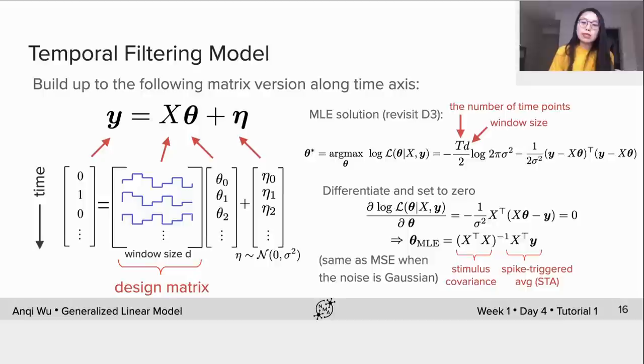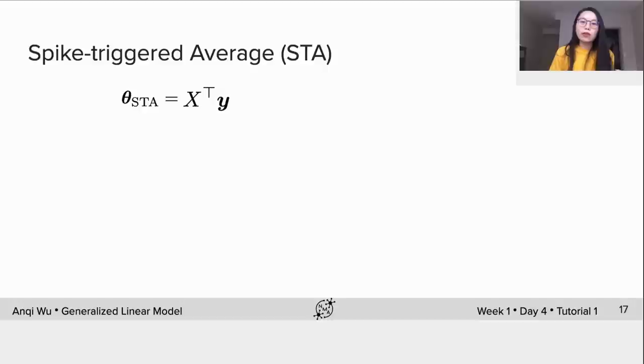One important concept I want to expand a little bit here is the spike-triggered average. It is also a popular estimator for the filter which is written as XᵀY, where Y is a binary vector with 1s for spikes and 0s for no spikes. What is it calculating? Here are some animations.